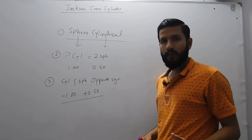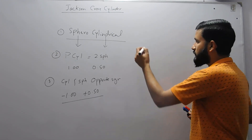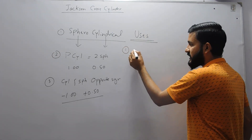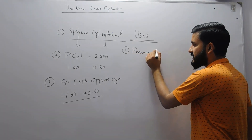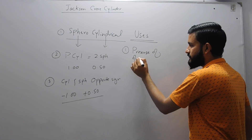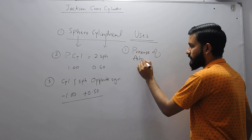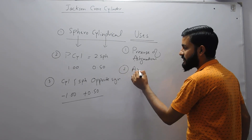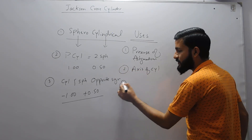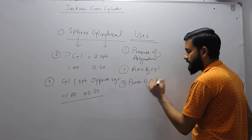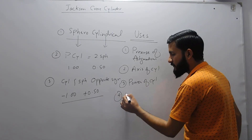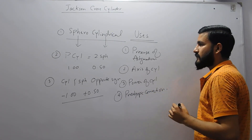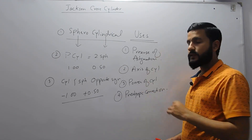The next point we will discuss is the uses of cross cylinder. Number one, it is used to check the presence of astigmatism. If astigmatism is present, it is used to find the axis of cylinder required and then the power of cylinder. It is also used to give presbyopic correction.